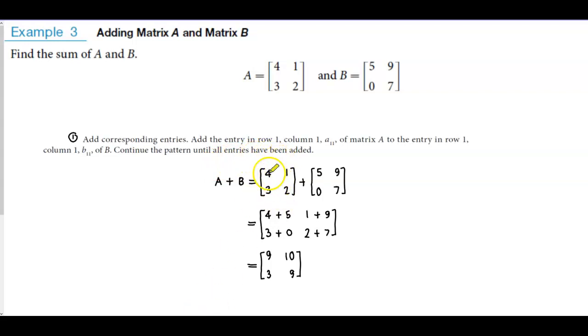So we have four and five, which is four plus five. We have one and then nine, which gives us one plus nine. We have three and zero, which gives us three plus zero. And we get two and seven, which is two plus seven.